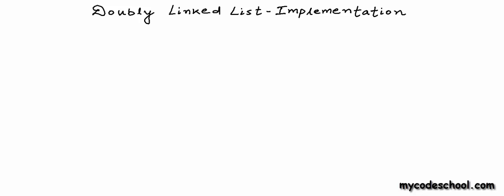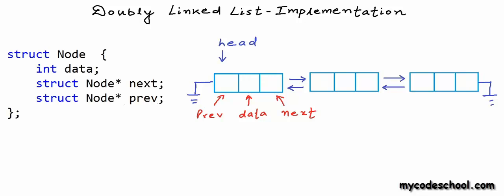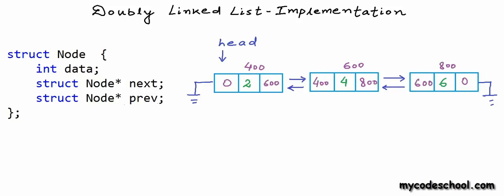In a doubly linked list, as we saw in our previous lesson, each node contains three fields. I have drawn a logical representation of a doubly linked list here. One field to store data, one to store the address of the next node, and one to store the address of the previous node. Let's say these nodes are at addresses 400, 600 and 800 respectively. We must also have a pointer variable pointing to the head node, which we commonly name 'head'.